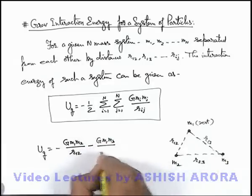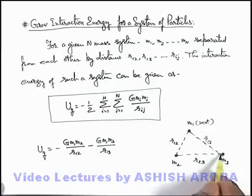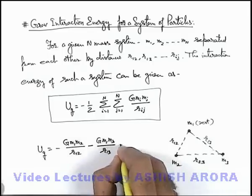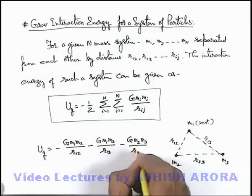So work done against the forces of m1 in bringing m3 from infinity to here will be minus G m1 m3 over r13. And work done in bringing m3 from infinity to this point against the forces of m2 will be minus G m2 m3 over r23.